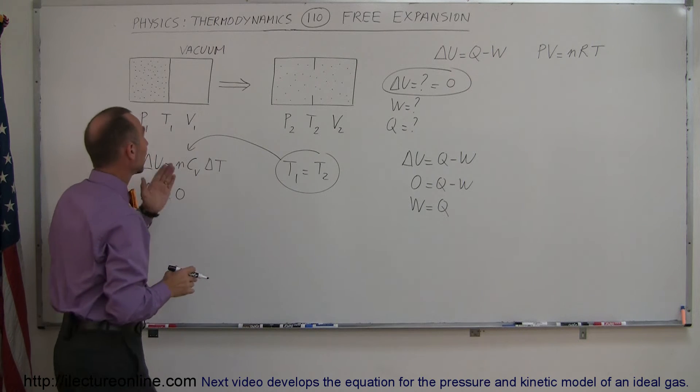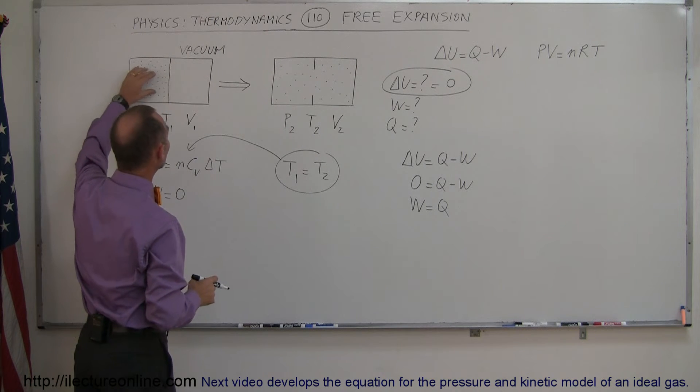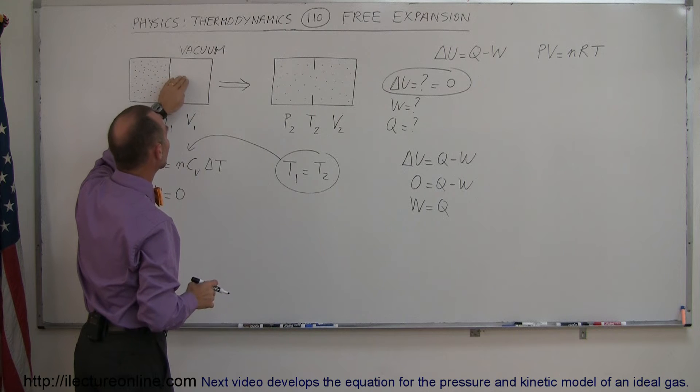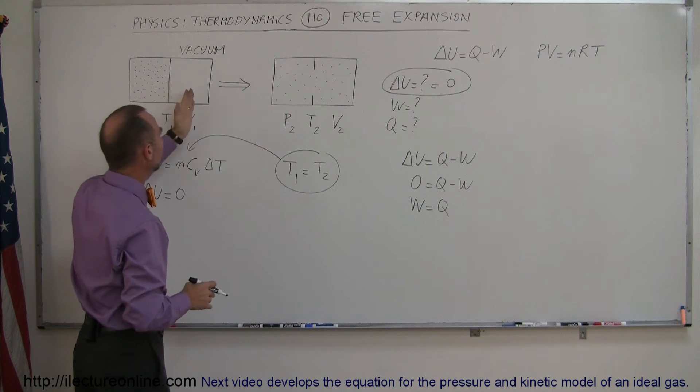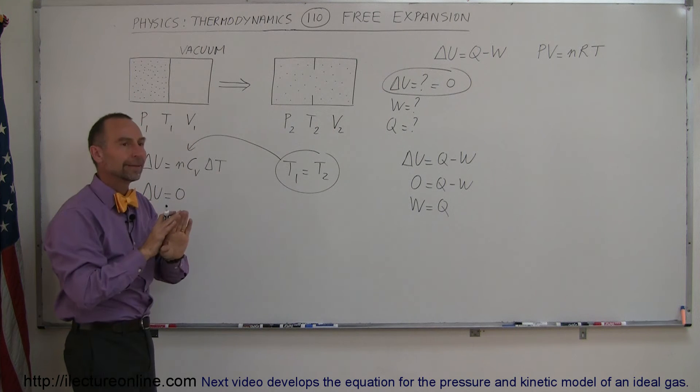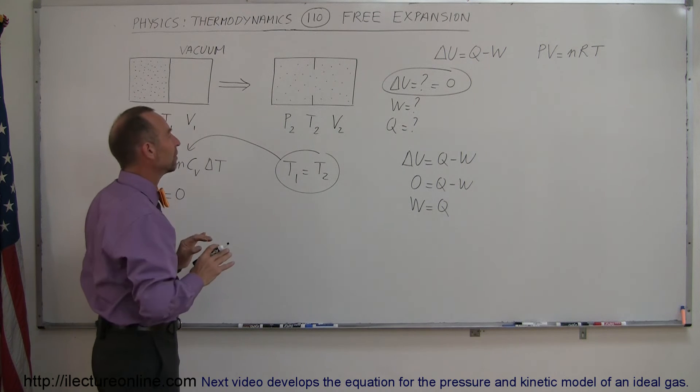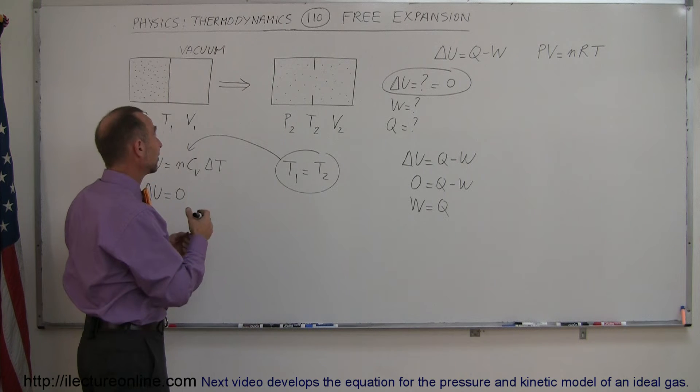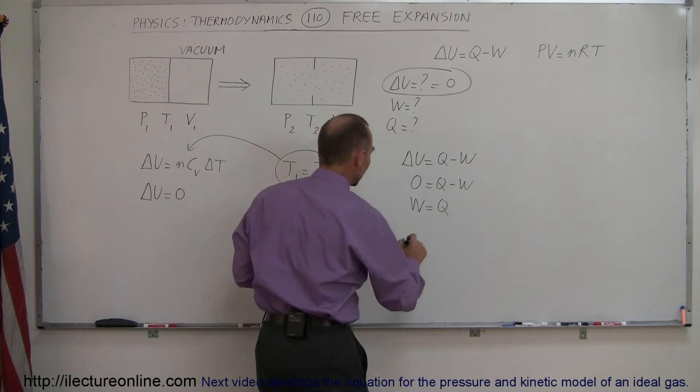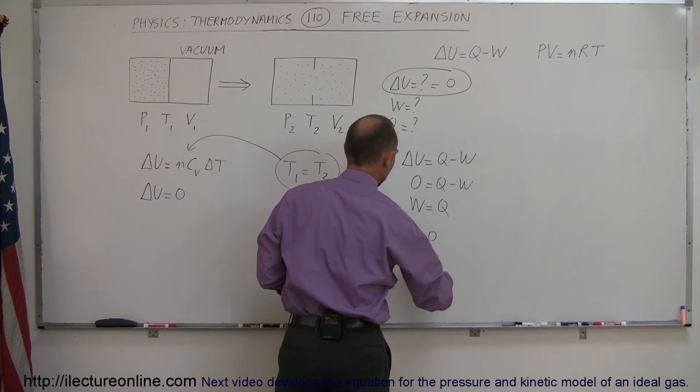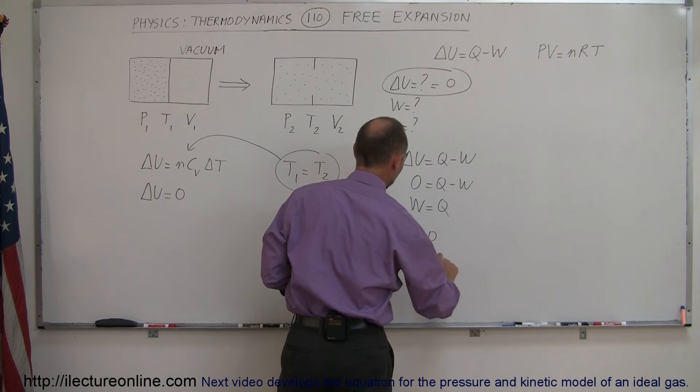Another way of also looking at it is when we break the membrane and gas can travel over here, since this is a vacuum, it's not pushing against anything. And since the walls are firm and they can't move, the volume of that box is not being expanded. So another way of looking at that is that work also has to be 0. So it makes sense then that also Q is equal to 0, and therefore work is equal to 0.